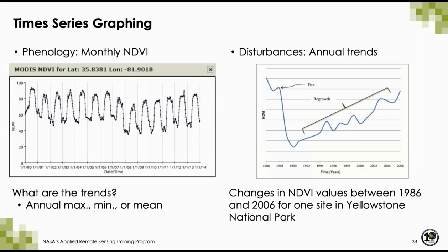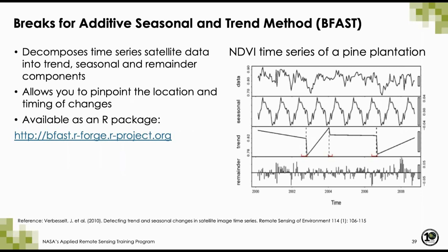One of the most valuable ways to use time series data is by graphing patterns to identify short-term and long-term trends. For example, using monthly NDVI values to look at phenology trends — you can calculate annual maximum, minimum, or mean values depending on your application. One way to do this type of analysis is using Breaks For Additive Seasonal and Trend (BFAST). This program decomposes time series satellite data into trend, seasonal, and remainder components and allows you to pinpoint the location and timing of changes. It is available as an R package at the website listed here.